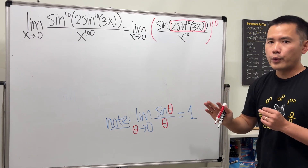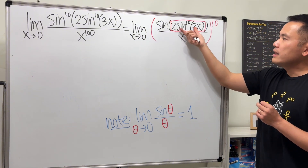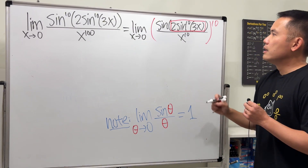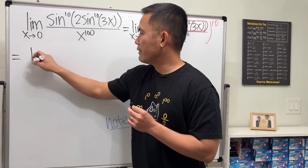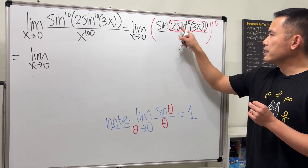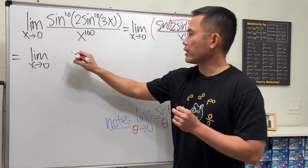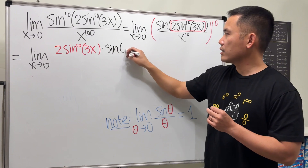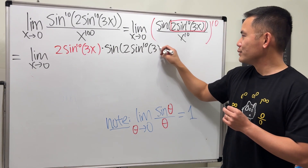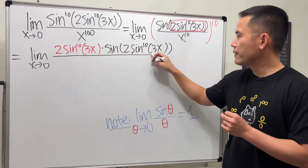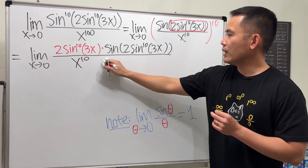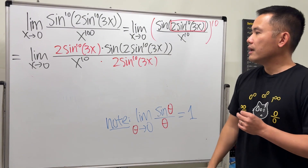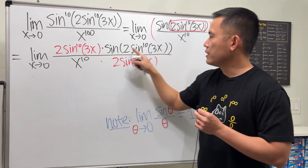We have an extra 10th power, but don't worry — we can use limit laws to break it apart later. Right now our goal is to introduce the matching term on the bottom so we can use that standard limit. This quantity 3x is approaching zero as x approaches zero. So we multiply top and bottom: we have 2·sine^10(3x) times sine(2·sine^10(3x)) over x^10, and we also put the same term on the bottom so we're effectively multiplying by one.